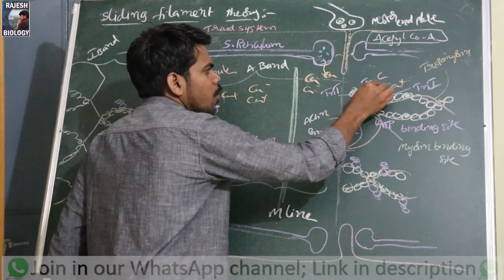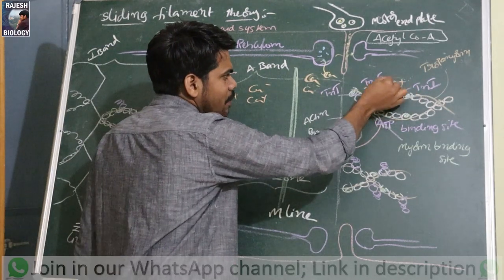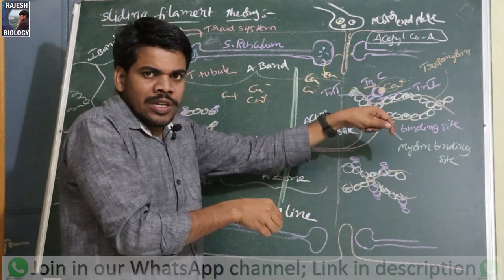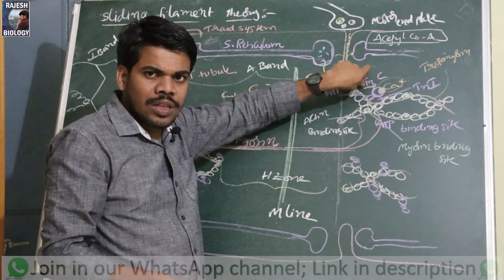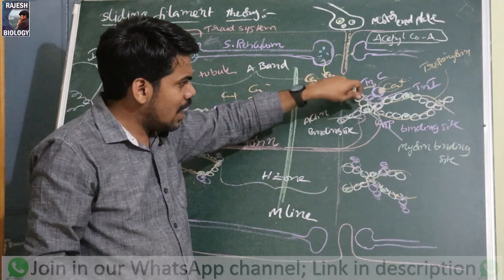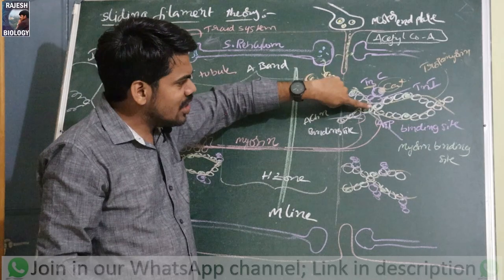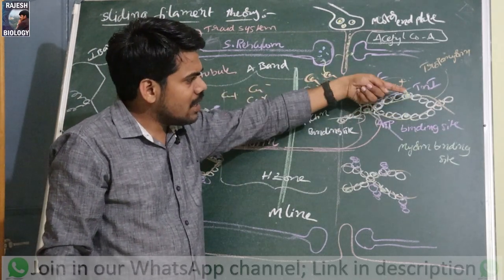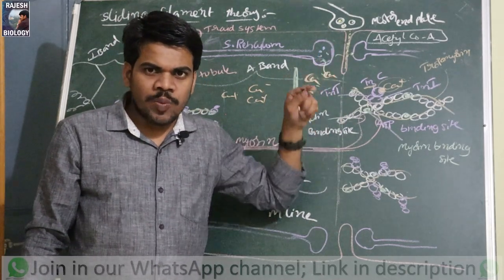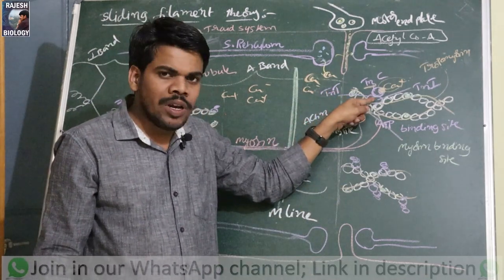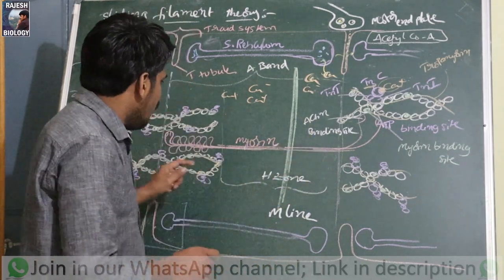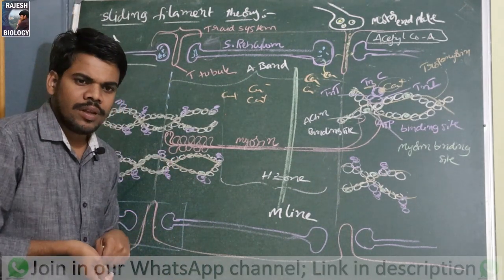These calcium ions bind with troponin C. Troponin C, troponin T, and troponin I together form troponin — troponin T and I are both bound to actin as well as tropomyosin. When troponin binds with calcium, it alters the position of tropomyosin. Tropomyosin generally covers the myosin binding sites on actin, but when its position is altered, the myosin binding sites are exposed.